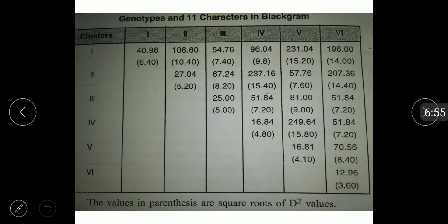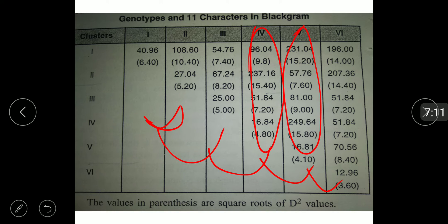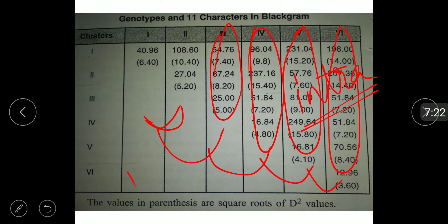In this we can see that average intra and inter cluster. This is the inter cluster, between clusters. Intra cluster means within cluster. This is having no major divergence. It's intra, within the cluster.